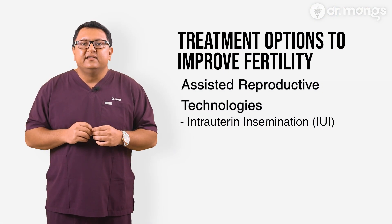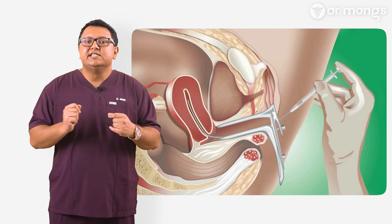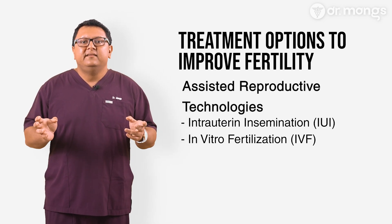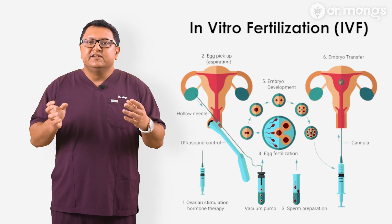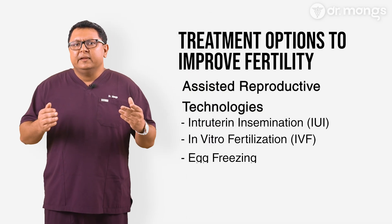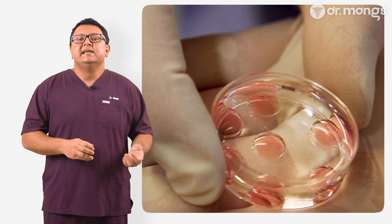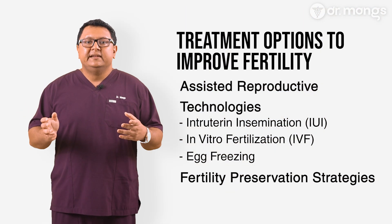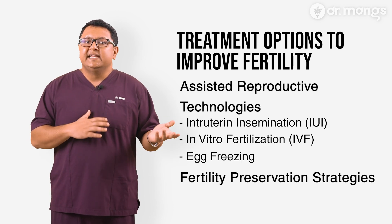IUI, or intrauterine insemination, may be effective for women with mild endometriosis by placing sperm directly into the uterus, increasing the chances of fertilization. IVF is often recommended in women with moderate to severe endometriosis where the tubes may have been damaged, and it is one of the most effective treatments, especially when other approaches have not been successful. It is important to remove all endometriosis lesions via clean, effective surgery prior to IVF to improve the chances of a successful pregnancy. For women not yet ready to conceive but concerned about future fertility, egg freezing is a viable option. Younger women diagnosed with endometriosis who wish to delay pregnancy may consider fertility preservation options such as egg or embryo freezing.